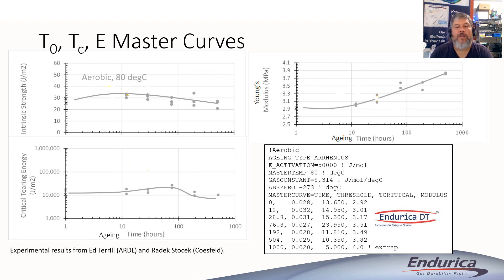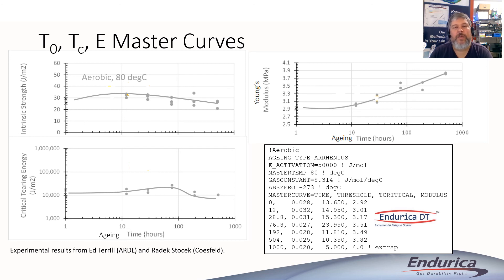The text box in the lower right is showing the syntax that you can use now in the Endurica solver to define the aged properties and these master curves in the Endurica DT code. We use tabular functions for all of these, so if it happens in the experiment, you can represent it in your simulation.